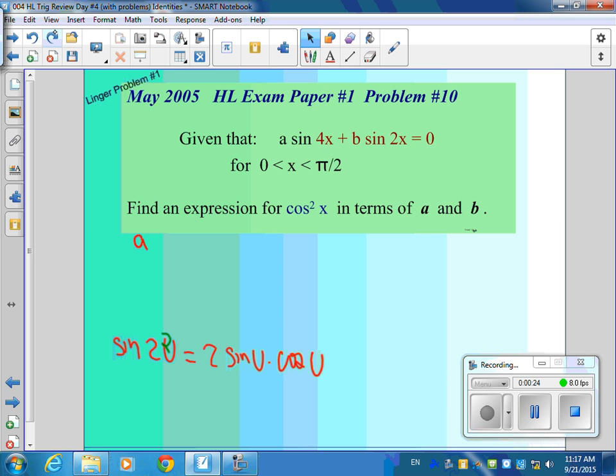So what I'll do with that sine 4x is use that by putting 2x in for u. That gives me a times 2 times sine 2x cosine 2x plus b sine 2x equals 0.